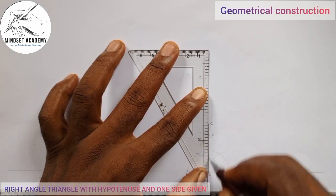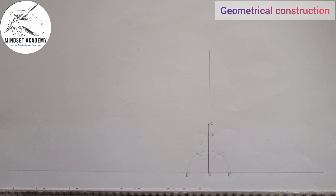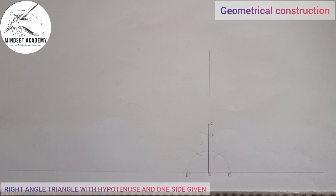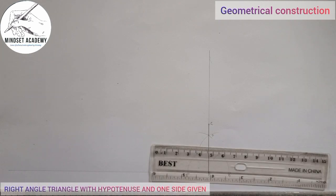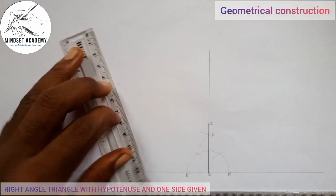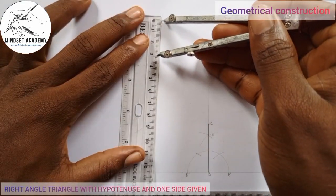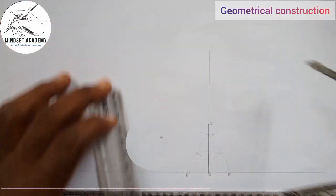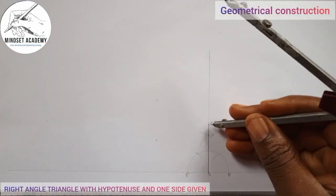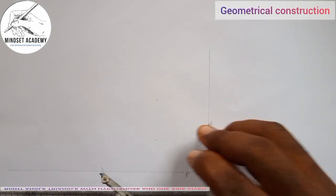Now my hypotenuse is given to be 100 millimeters. On my meter rule, I'm going to measure 100 millimeters in this manner. From 0 to 10 is 100. I'll place it on my point C and strike the horizontal line this way. Where I strike that point will be my point A.